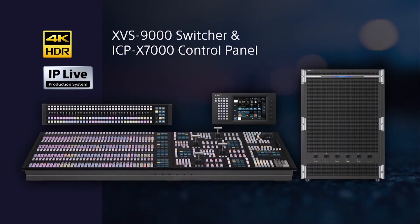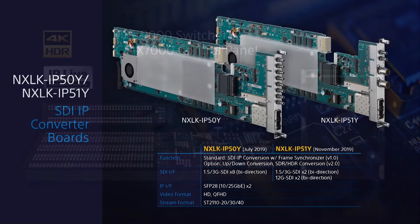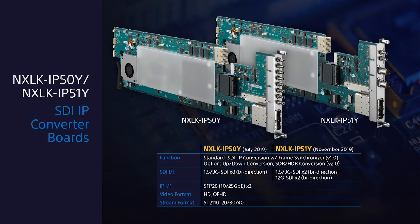Previewed last year at NAB, our top-of-the-line XVS 9000 multi-format switcher is now a reality, ready to handle up to 80 4K inputs and up to 40 4K outputs, and equally adept at supporting SDI, 12G SDI, or 100G IP Live connections. To better connect IP Live with SDI devices and systems, we're launching two new SDI-IP converter boards — the NXLK IP50Y and IP51Y modular boards to fit in the NXL FR316 frame, both supporting ST2110 4K and HD natively.